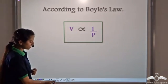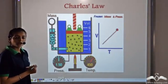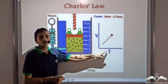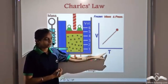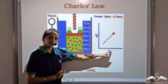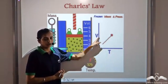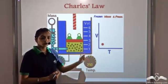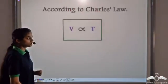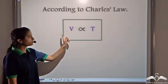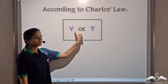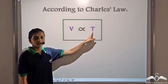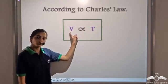Charles' law states that the volume and temperature are directly related. This means as temperature increases, volume increases, and as temperature decreases, volume decreases. So from Charles' law, we know that volume is directly proportional to temperature.